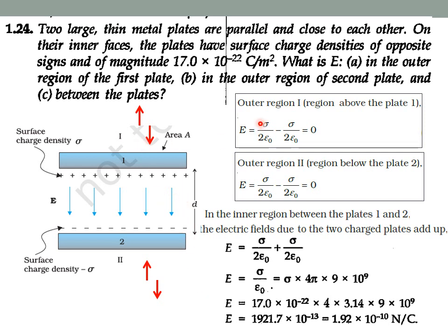Let's calculate the electric field in outer region 1. The electric field due to the positive charges on plate 1 points outward, and the electric field due to the negative charges on plate 2 points in the opposite direction. Each plate produces a field of magnitude σ/(2ε₀). Since one plate has +σ and the other has −σ, the two fields have equal magnitude but act in opposite directions, so the total electric field in the outer region of plate 1 is zero.